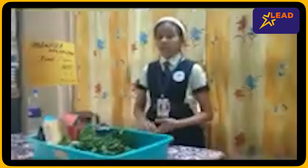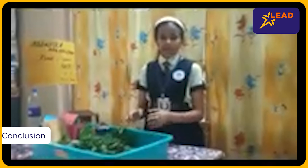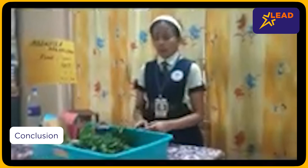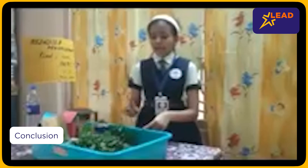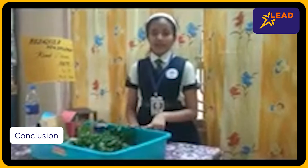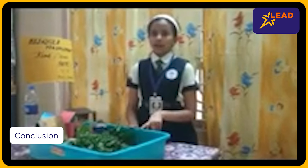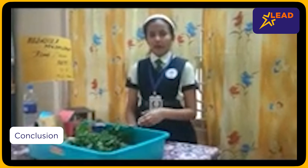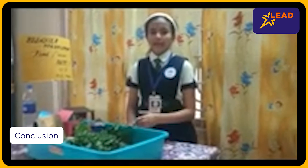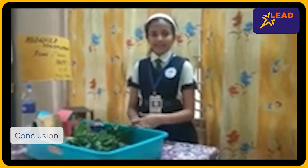From this, we conclude that by growing more plants and constructing barriers, we can prevent floods from entering the cities.